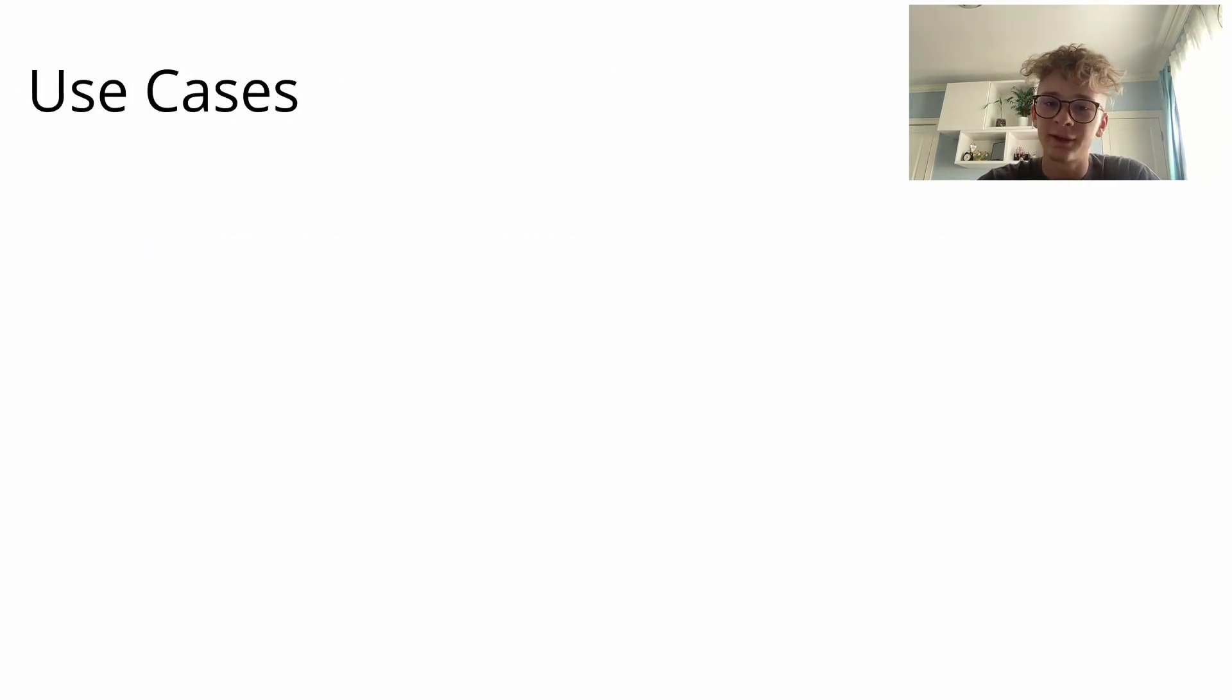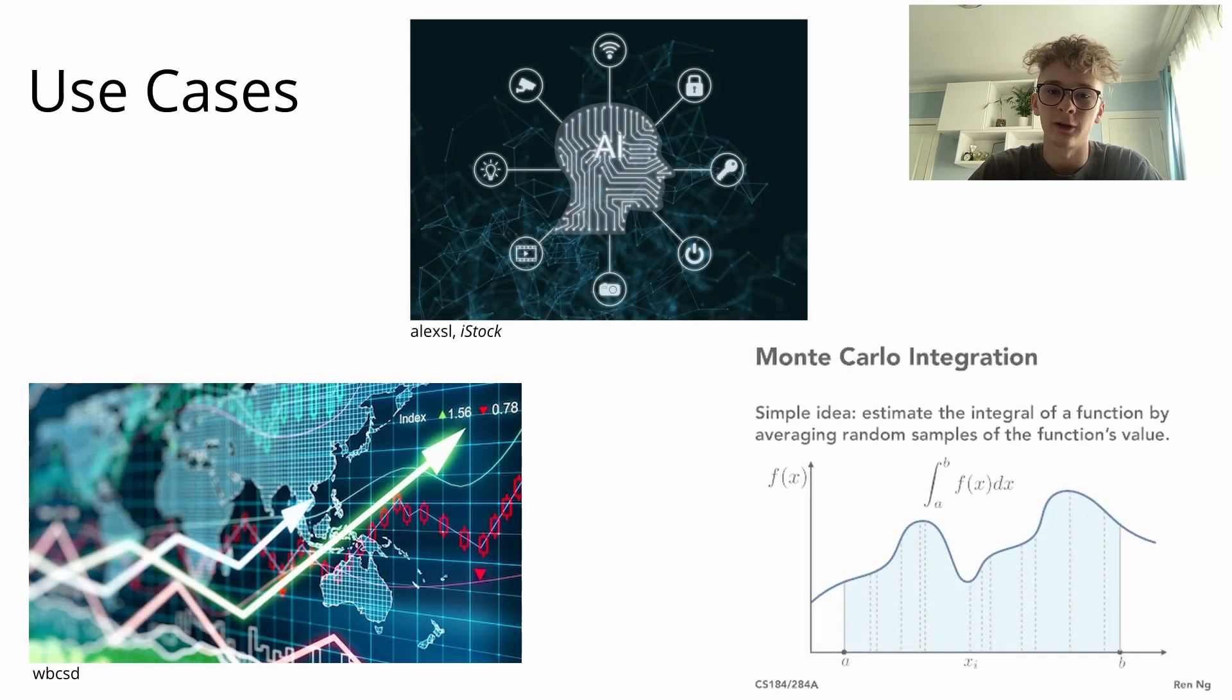Amplitude estimation isn't only limited to figuring out the probability of picking a key. It has many other applications such as finance, machine learning, and Monte Carlo integration. In terms of finance, imagine that the keys from before were replaced with future spot prices, or market prices of assets, and instead of a lock, we have the profit based on the future spot prices.